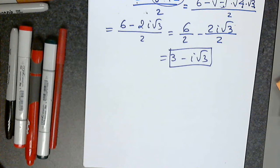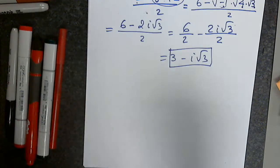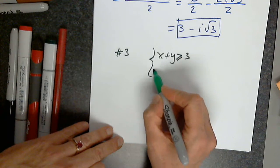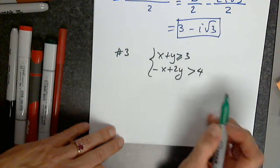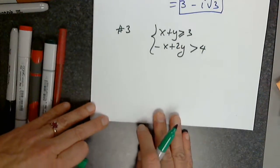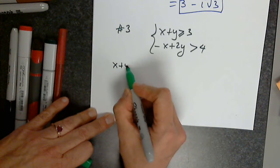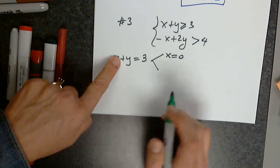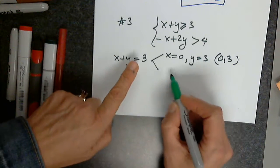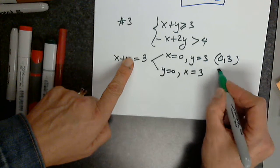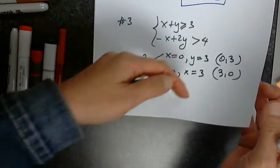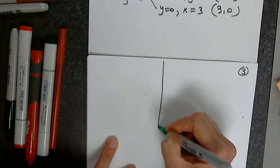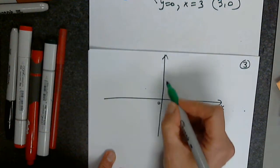Number 3. We have x plus y greater than or equal to 3, and we have negative x plus 2y greater than 4. Some mistakes occurred here. First, I have to write this. Then I have to find two points. When x is 0, y is 3, so the point is (0, 3). When y is 0, x is 3. I have the necessary points to graph the first line — not the inequality just yet, just the first line.